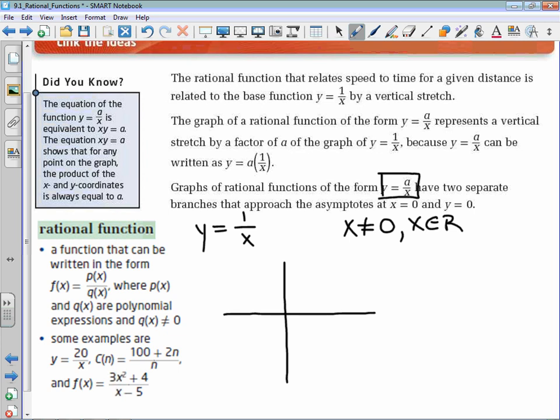When we look at y equals 1 over x, some pretty important concepts is that as x becomes very, very large, so far to the right on the horizontal axis there, we're dividing 1 by a successfully larger and larger number.